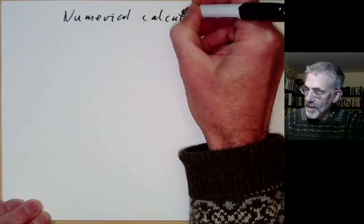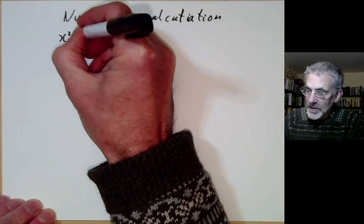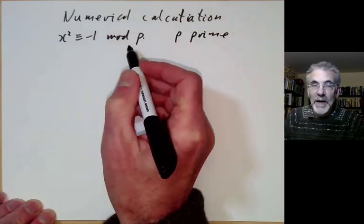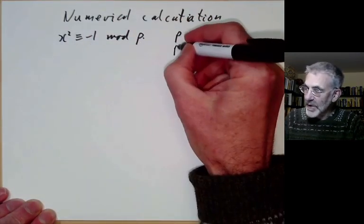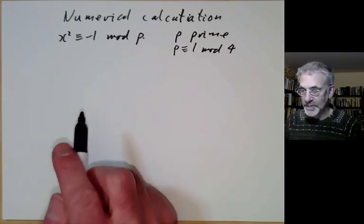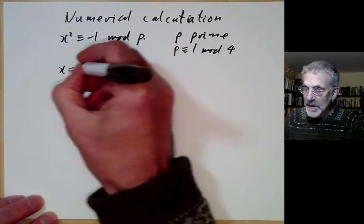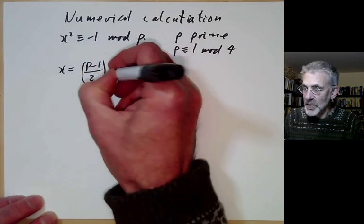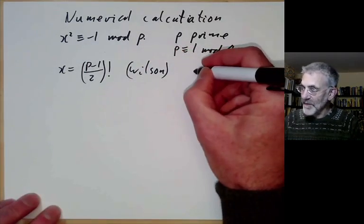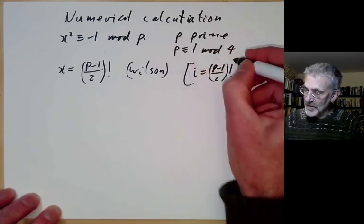The first problem is: how do we solve x squared is congruent to minus 1 modulo p? Here p is a prime. We saw earlier that a prime has a square root of minus 1 if and only if p is congruent to 1 modulo 4 (ignoring the trivial case p equals 2). We saw a solution x equals (p minus 1) over 2 factorial using Wilson's theorem — so i equals ((p-1)/2)! which looks a bit weird.